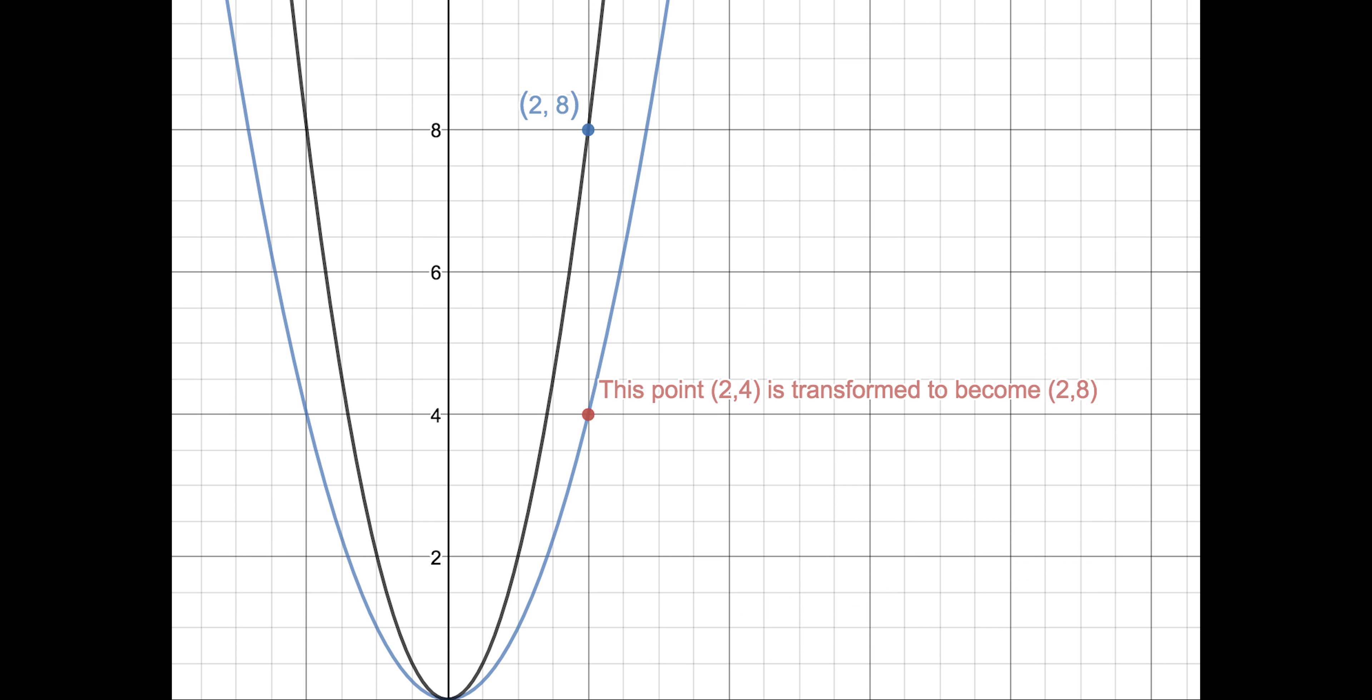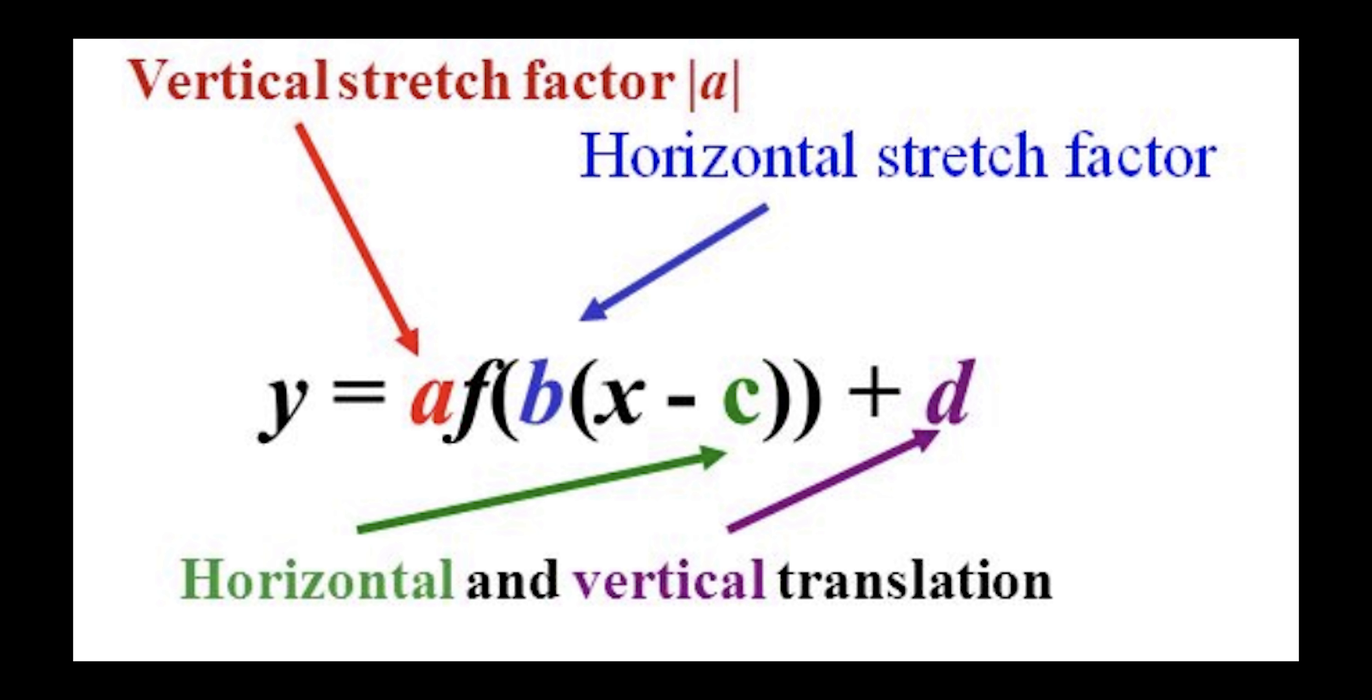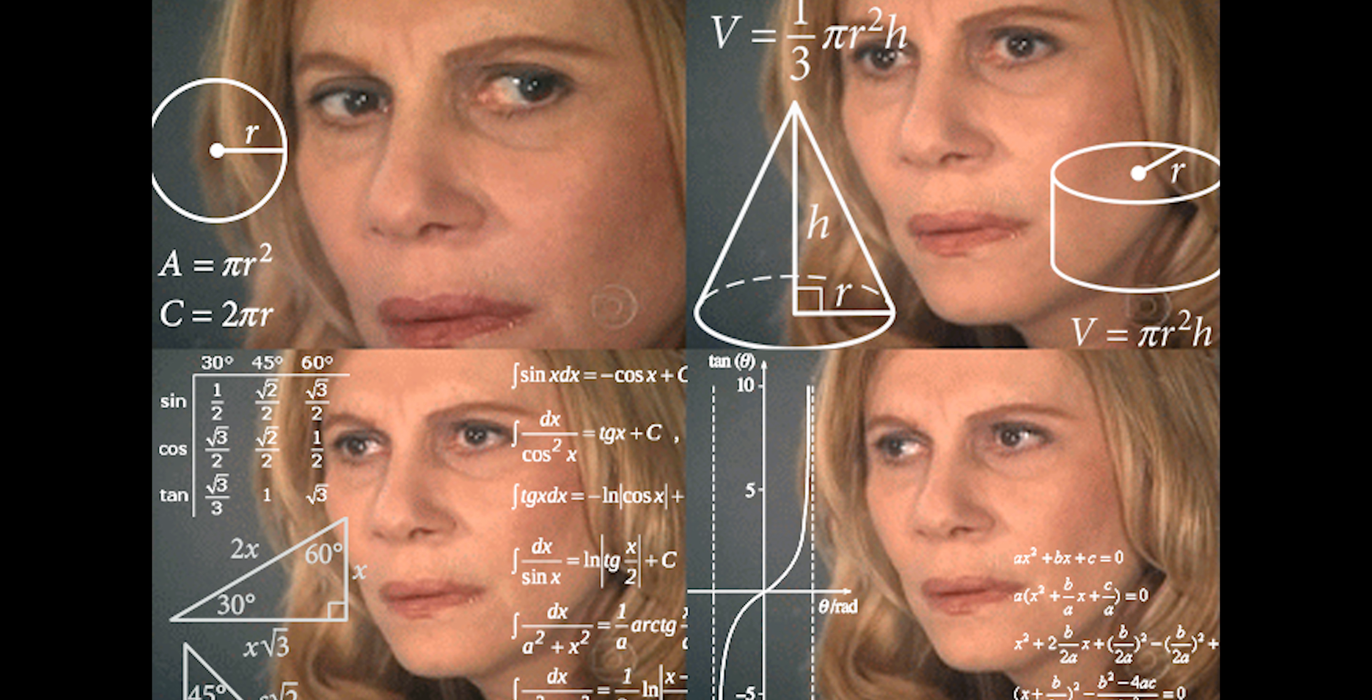For example, you can stretch a quadratic function x squared into 2x squared. Algebraically, the equation for a transformation is a, f, b, x minus c plus d. It looks extremely confusing, I know, but I'll explain in a minute.